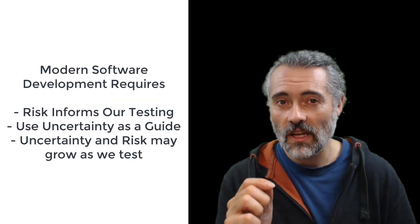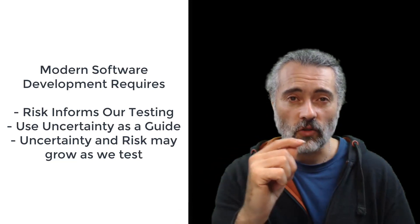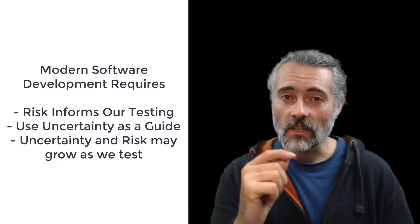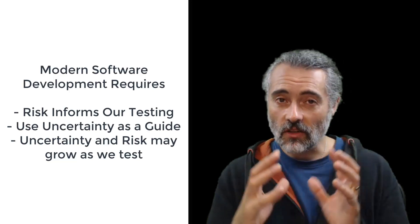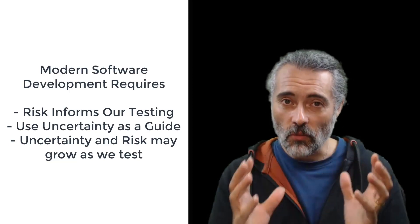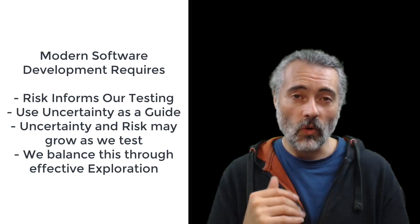But as we test and we learn more, we're also increasing our uncertainty because we're identifying new risks, new areas of uncertainty, new conditions that we haven't covered, new data scope that we haven't hit. And we have to constantly balance this and build a model of our risk and uncertainty, what we've covered, what we've not, what we know, what we don't know.